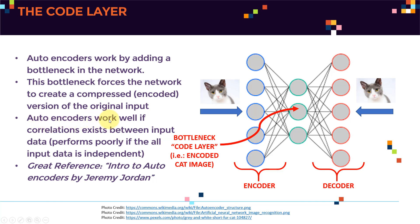Autoencoders work very well — and this is important — if correlations exist between the input data. If all the pixels are completely uncorrelated, meaning they are independent from each other, then it will be very difficult to perform compression. Autoencoders work great if our input has correlations between the pixels. Instead of having, say, two vectors, we can compress them and have one vector instead to represent both of them. That's how we do compression.